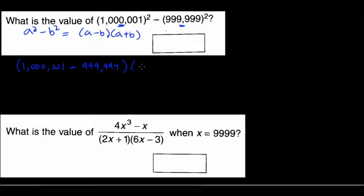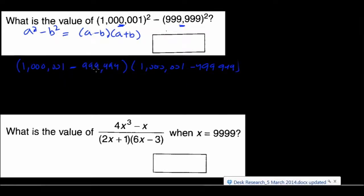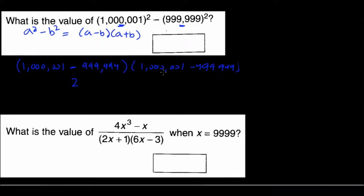So we have (1,000,001 - 999,999) times (1,000,001 + 999,999). Here a is 1,000,001 and b is 999,999. So a minus b gives us 2, and a plus b gives us 2,000,000. Doing this in your head saves a lot of time, and 2 times 2,000,000 gives us 4,000,000.